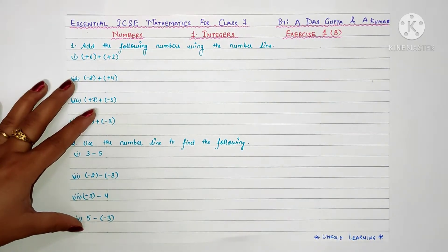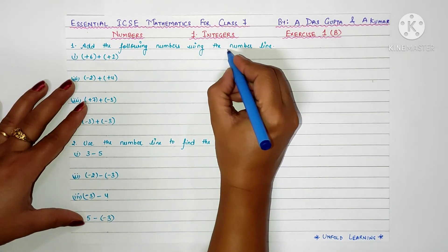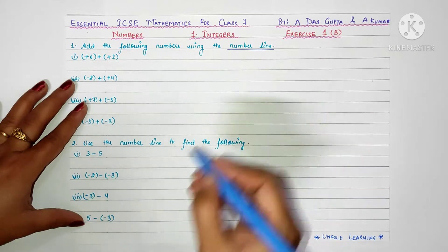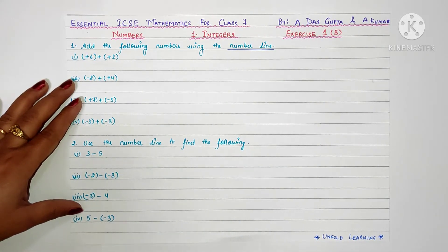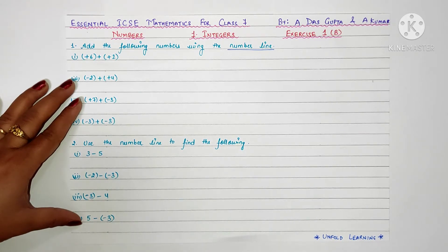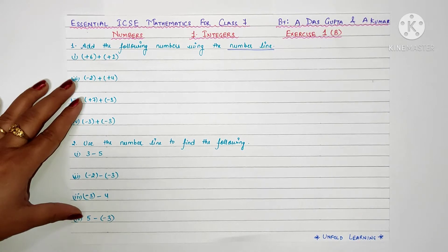Let's start with question number 1: add the following numbers using a number line. Remember, whenever you get a number line question, you should never draw the number line with a pen — you need to draw it with a pencil. Always draw neatly with a pencil; otherwise your question may be cut or given zero marks.